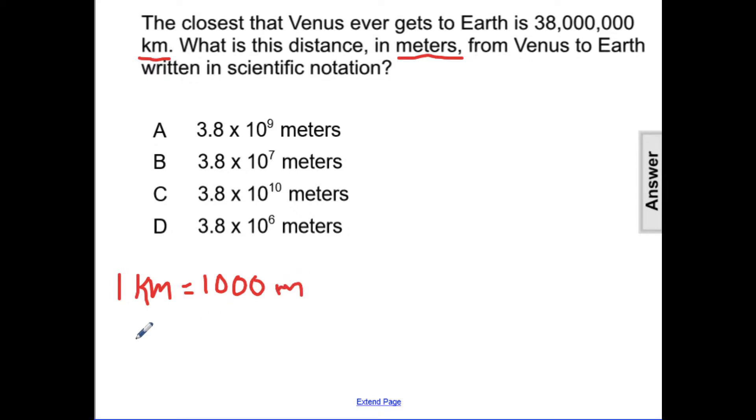So in order to find the amount of meters, we need to multiply our number, 38 million, times 1,000, and we get 38 billion.